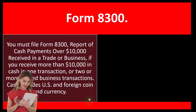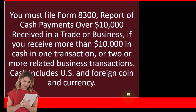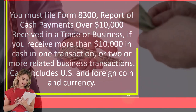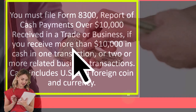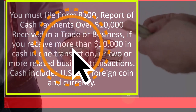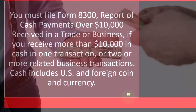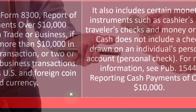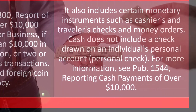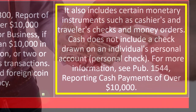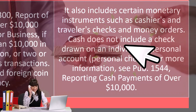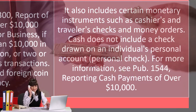Form 8300 — you must file Form 8300, Report of Cash Payments Over $10,000 Received in a Trade or Business, if you receive more than $10,000 in cash in one transaction or two or more related business transactions. Cash includes US and foreign coin and currency, and also includes certain monetary instruments such as cashier's and traveler's checks and money orders. Cash does not include a check drawn on an individual's personal account.